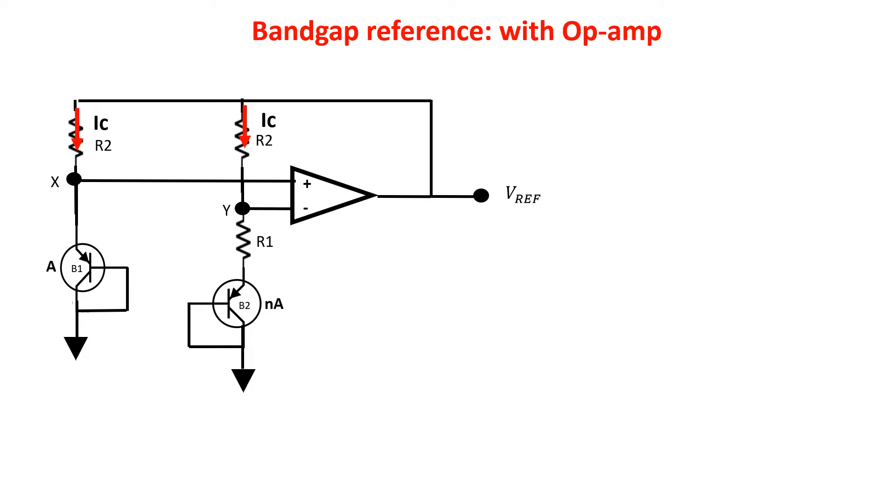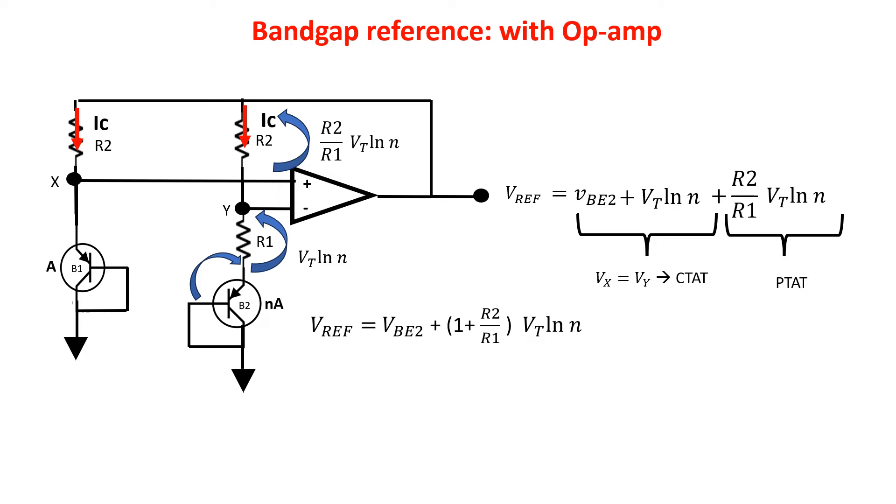So Vref is equal to VBE2 plus VT log N plus R2 times VT log N over R1. Note that this part is the voltage at point Y, which being equal to Vx is a CTAT voltage, and this one is the PTAT part obtained by flowing on R2 the PTAT current VT log N over R1. Vref can be written in this way where we can realize this part is equal to alpha. So we can choose R1 and R2 to get the alpha we need.